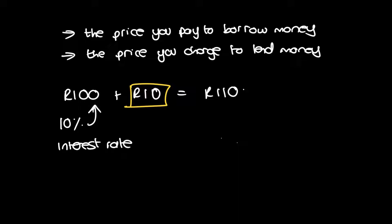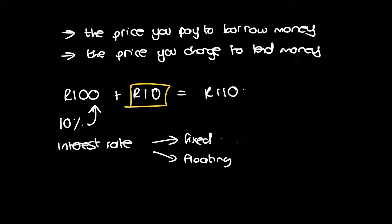Your interest rate can be fixed or it can be floating. Fixed means it's going to stay the same for a duration of time, and your calculations will reflect that. Floating means there is a possibility of it changing, dependent on certain conditions.